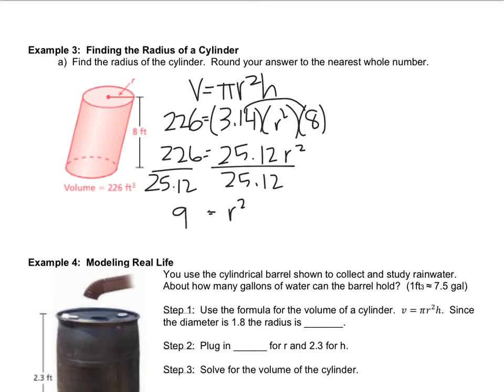And now if you think back to what we did in our last chapter, in chapter 9, we have to get rid of the square, and the way that we do that is by square rooting. Last chapter we would say positive and negative 9, but obviously you can't have a negative length, so it's just positive 3. So the radius would be 3 feet.